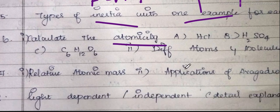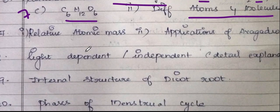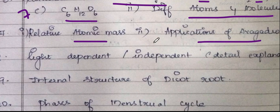Atomicity: for example, in HCl, H2SO4, C6H12O6 — these are the atomicities, from the seventh lesson. Also, differentiate between atoms and molecules, or define atomicity — we will learn this. Then relative atomic mass and applications of Avogadro's law — also the seventh lesson. Segregate: one definition is two marks, two marks for five marks.